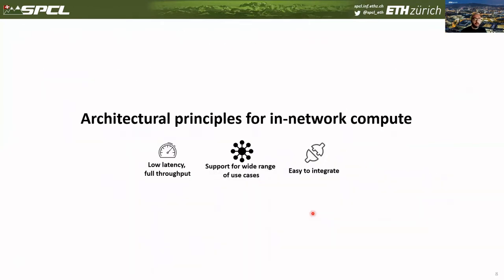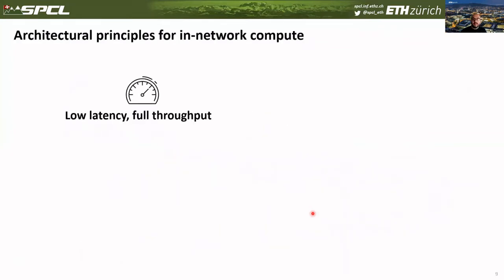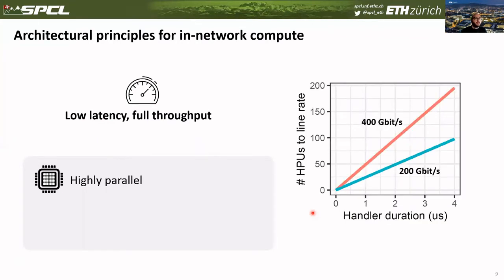Now let's get to the architectural principles. The first requirement is low latency and full throughput — by full throughput we mean the network bandwidth, so we want to keep line-rate. To achieve that, we need a highly parallel accelerator. Parallelism is the key to throughput. In this plot, we have the number of HPUs needed to keep line-rate as a function of handler duration. For example, if we have one-microsecond handlers and our line-rate is 200 gigabit per second, we need 25 HPUs to keep line-rate. If we double the line-rate, we also need to double the number of HPUs.